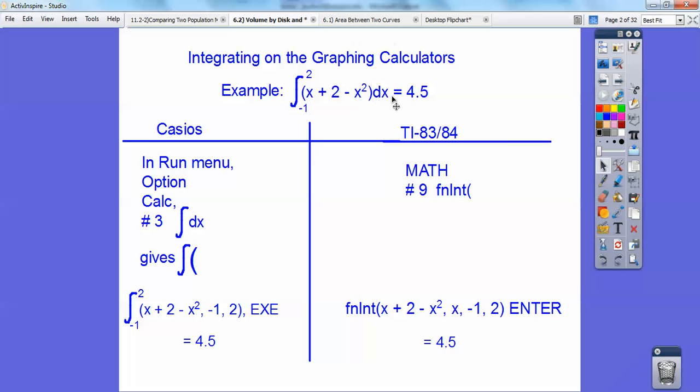But the integral of this, if we did it by hand, you get 9 halves or 4.5 from negative 1 to 2. In your Casios, you just hit Run and then go to your menu and then Options and then Calculate. Number 3, find the integral symbol and it'll give you this. And then you plug in your function right here and then you plug in your boundaries, negative 1 to 2. Close parentheses, and then just hit Execute right there. You don't need that comma right there. And it'll give you 4.5.